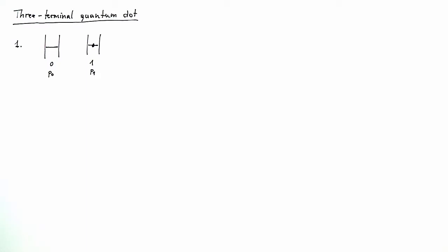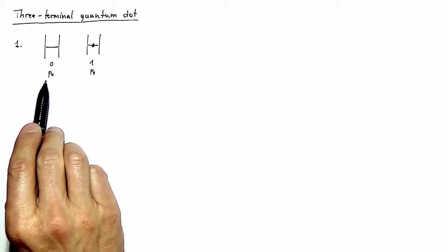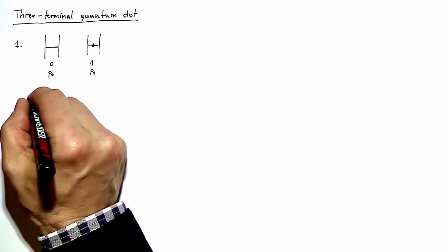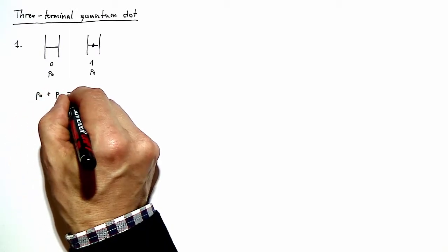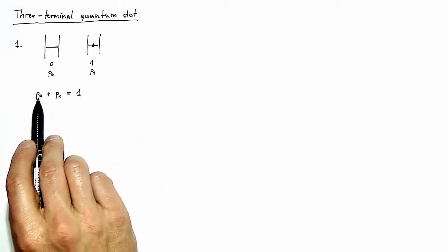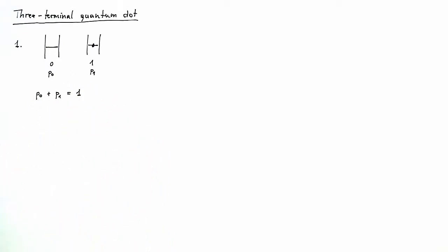Since these are the only two possibilities for the quantum dot state, P0 and P1 must sum up to 1, giving the equation P0 plus P1 equals 1. This means the two quantities are not independent, and we need only one additional equation to get explicit expressions for P0. This is a standard two-state model, which we have solved in the lecture, and you also find this solution in the book.